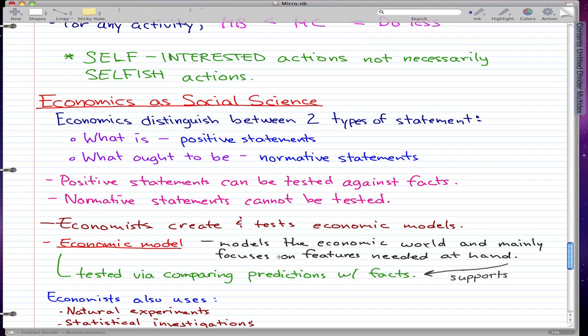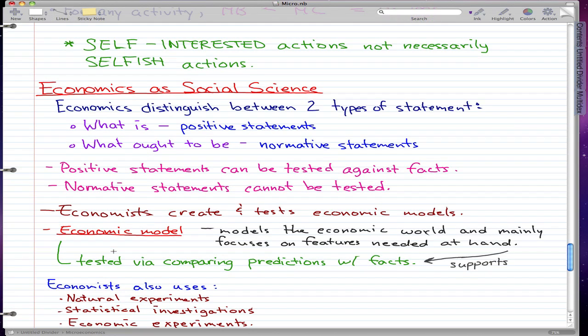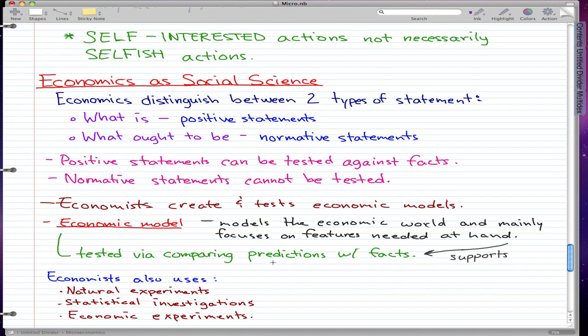It's totally manipulable by the economists and models the economic world. There are parameters and models that we can change and some that we can hold the same. That's what a model is all about. The economic model is tested by comparing predictions with facts. The facts are taken from the model and the predictions is what comes out of your head.